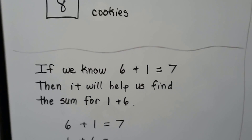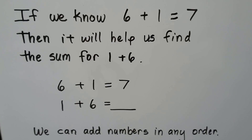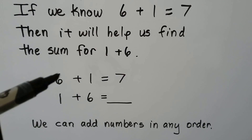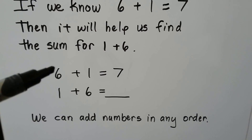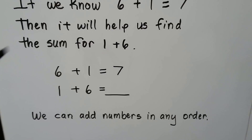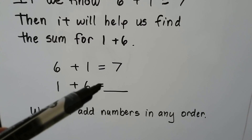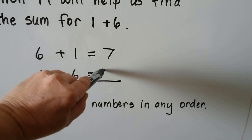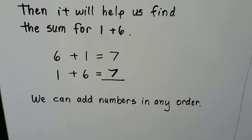If we know six plus one is equal to seven, then it will help us find the sum for one plus six, because we can add numbers in any order. If six plus one is equal to seven, then one plus six is equal to seven. We can add numbers in any order.